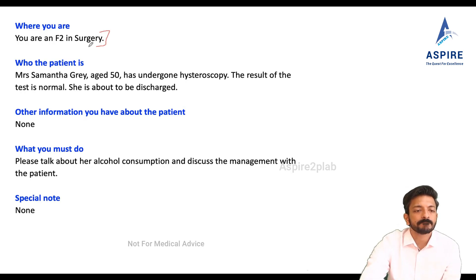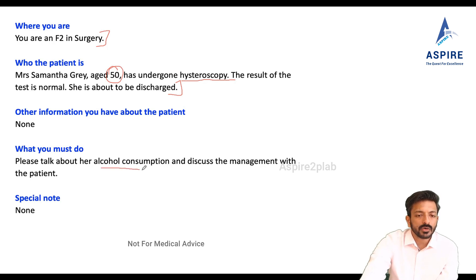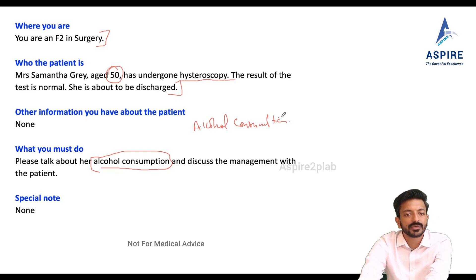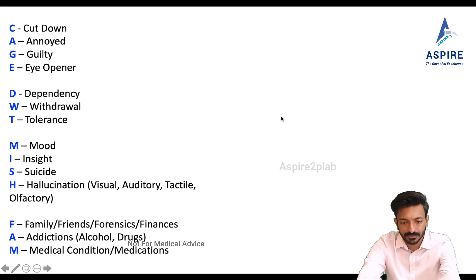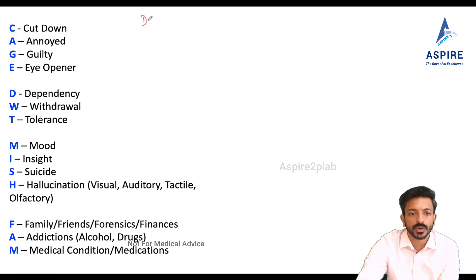You are in surgery. Miss Samantha Gray, age 50, has undergone hysteroscopy and the results are normal. She's about to be discharged. Talk to the patient about alcohol consumption. So let's see what questions you need to cover when taking the history of alcohol consumption. First of all, you need to ask if the patient is drinking alcohol or not — the first question will be: do you drink alcohol?